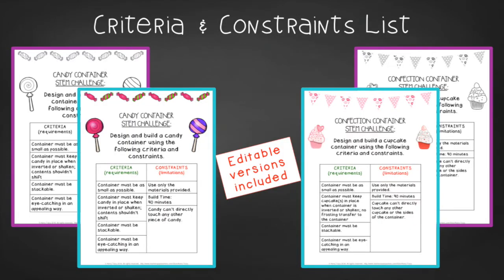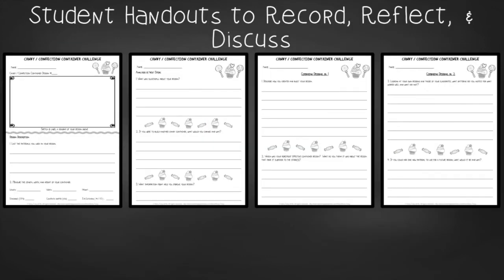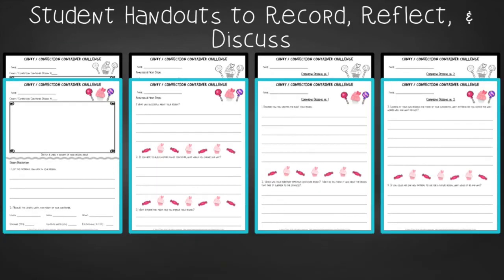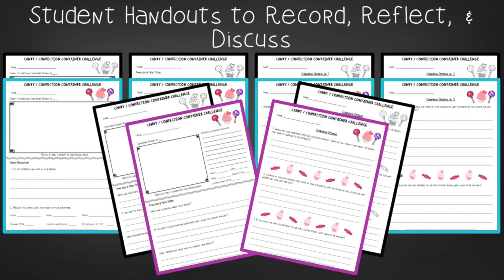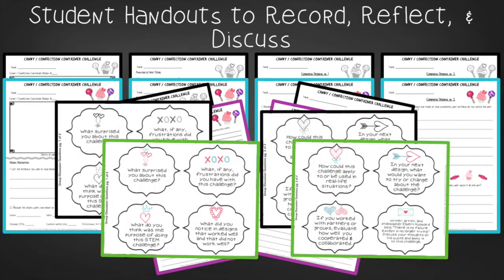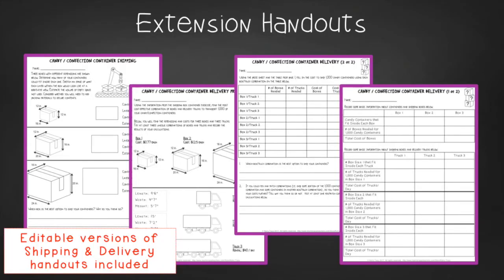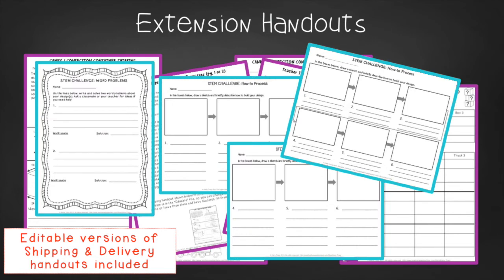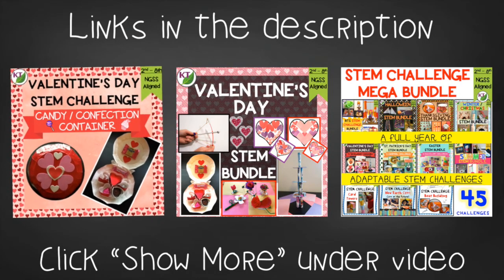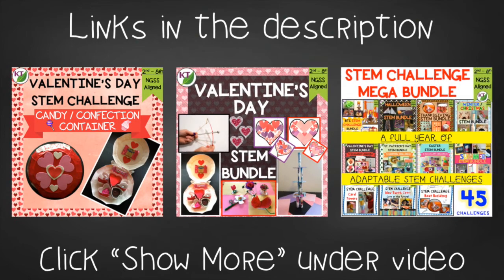You'll find two editable criteria and constraints lists so you can tailor the challenge to your students. For student handouts, there are two versions: a four-page expanded response version for younger students and a two-page condensed paper-saver version. You'll also find a set of group discussion questions. In the extension handouts you'll find editable shipping and delivery math exercises with teacher tips, as well as math extension and process flow templates. This resource is available individually and as part of the discounted Valentine's and mega STEM challenge bundles.